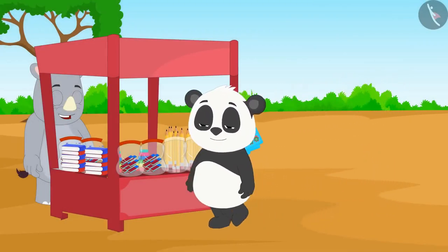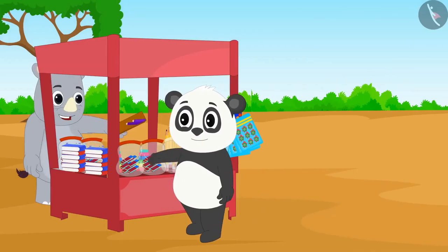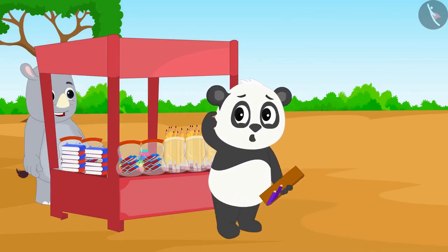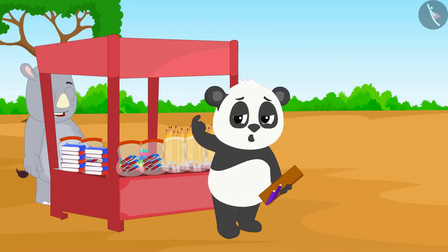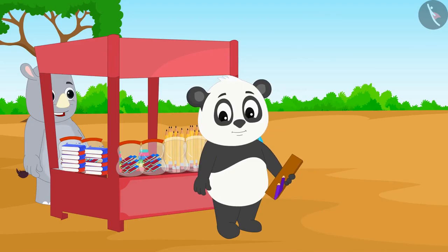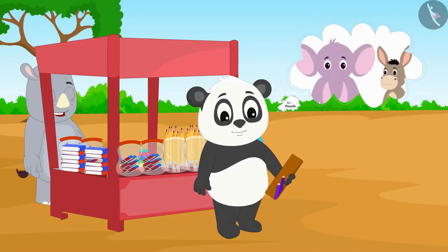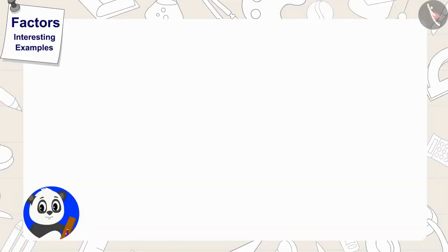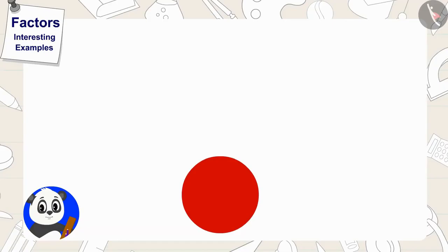Golu bought a box of 24 pencils from the market. Golu thought that he would distribute these pencils equally among his friends. At first, Golu thought that he would give 12 pencils to two of his friends. He made a circle on a paper and wrote 24 in it.